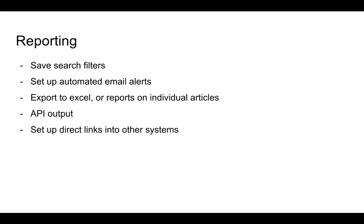In terms of creating reports, we can save search filters, set up automated email alerts, export data into Excel or reports on individual articles, have an API output for those who can work with APIs, and set up direct links into other systems. Altmetric data can appear within your university library catalogue if you have the technology to do that, so you can see publications alongside their altmetric data.